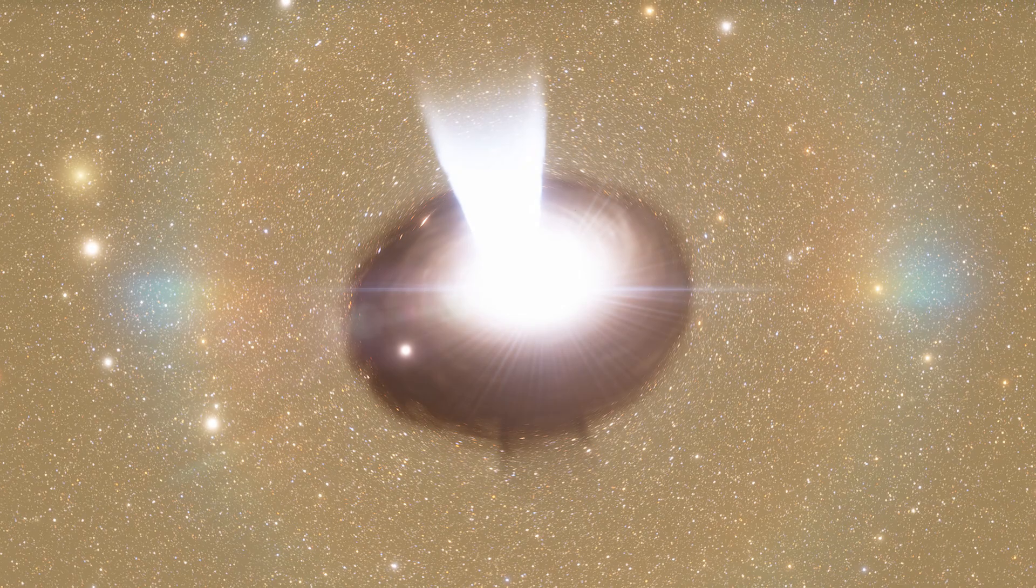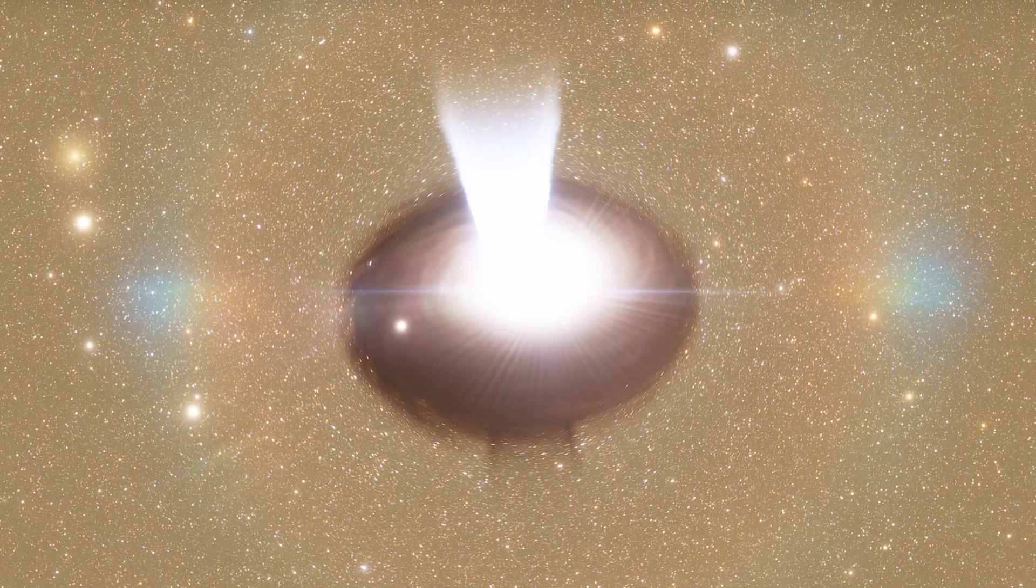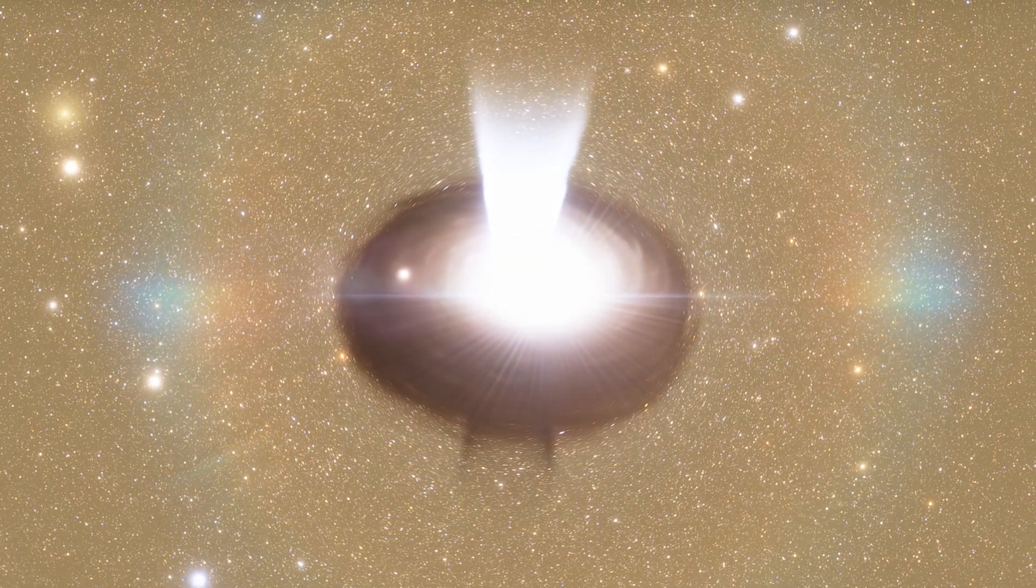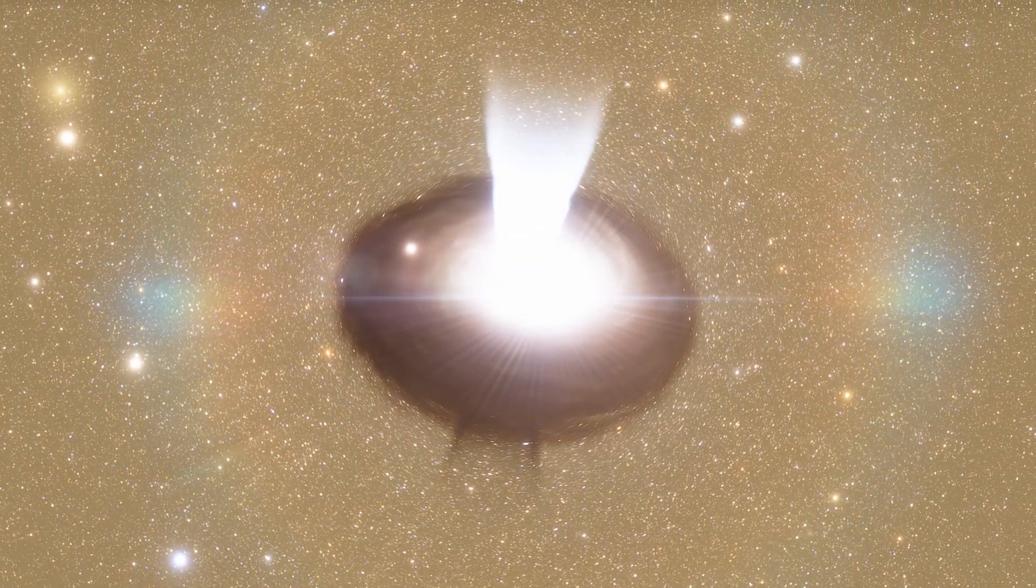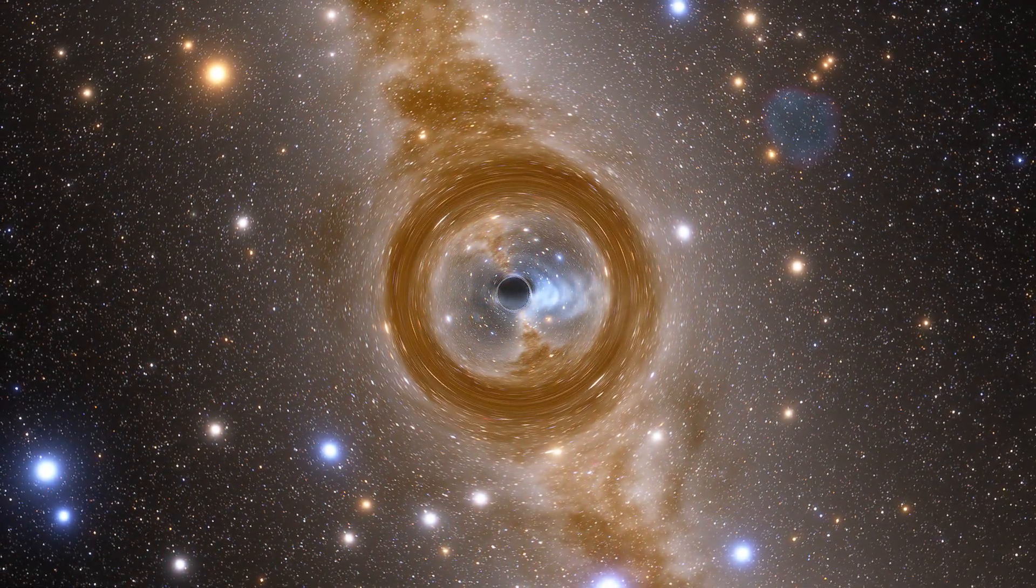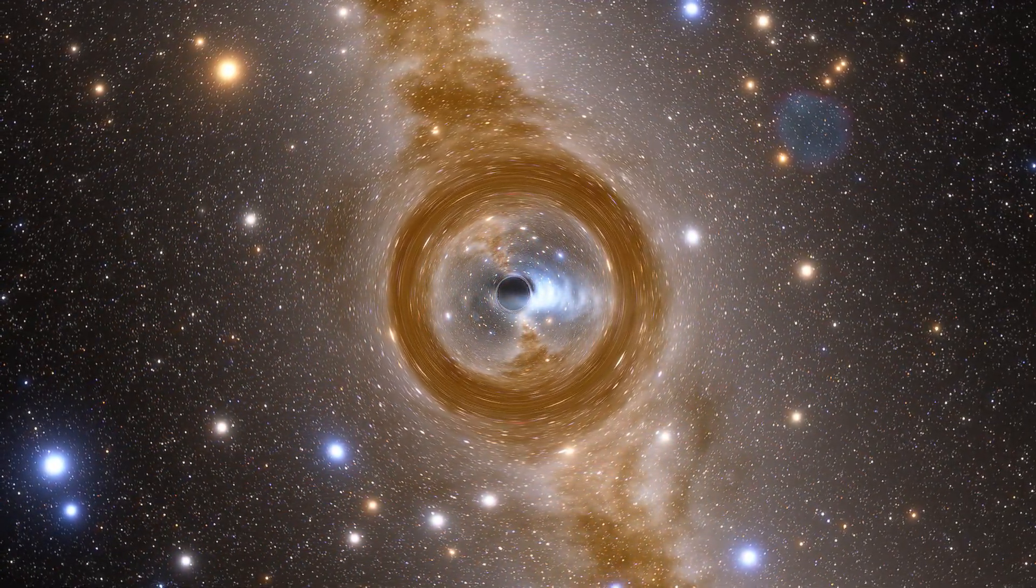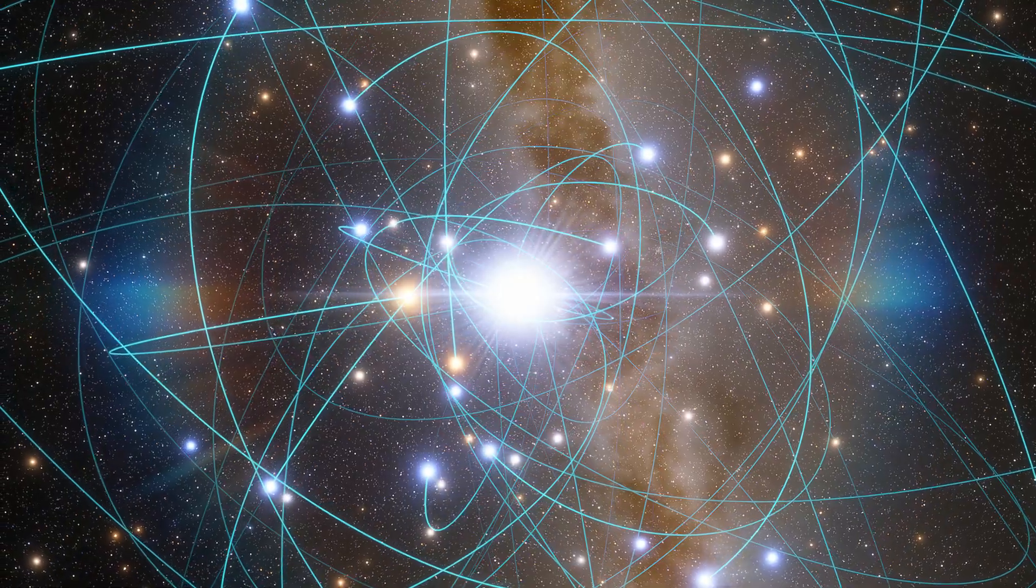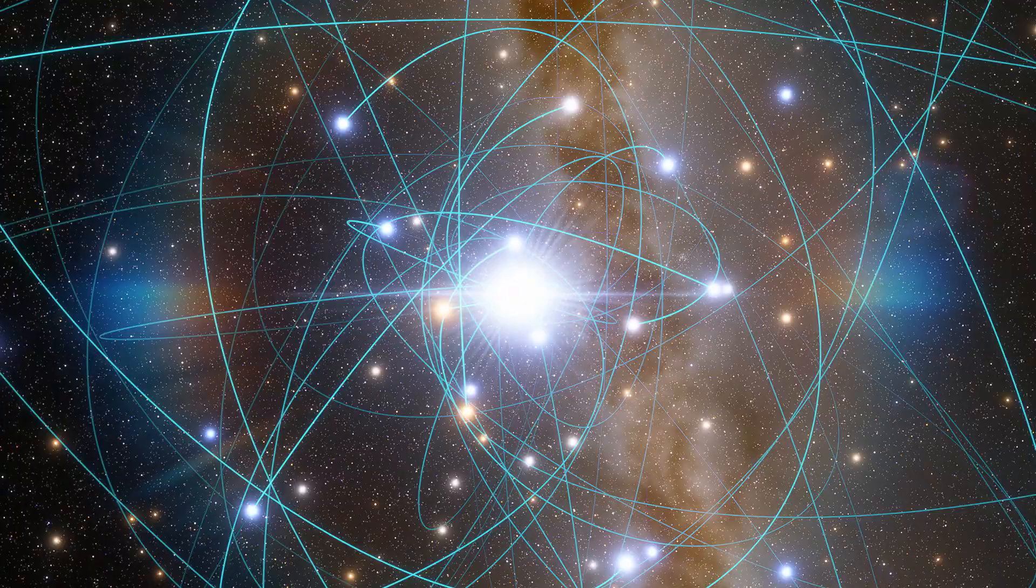Although the masses involved in this event are large by stellar standards, they are dwarfed by the supermassive black holes that astronomers believe are present at the center of almost every galaxy. Our galaxy, the Milky Way, hosts a supermassive black hole called Sagittarius A*, about 4 million solar masses, detected through the motions of stars orbiting it.